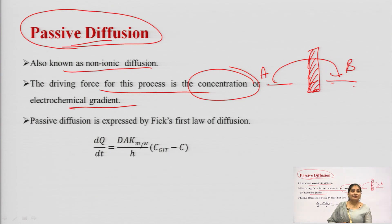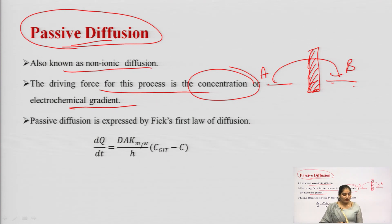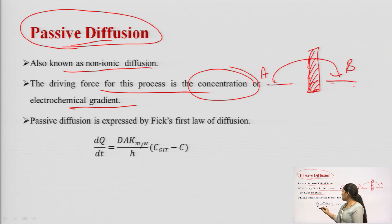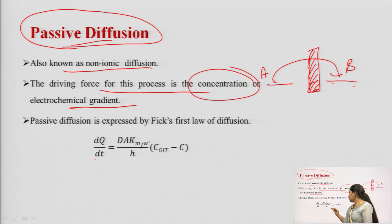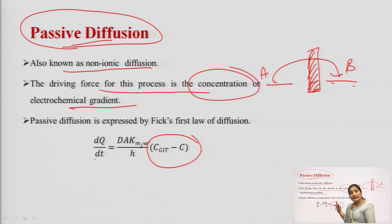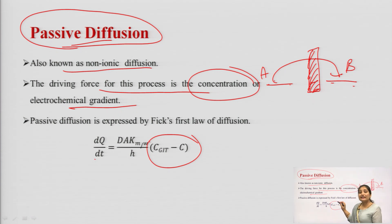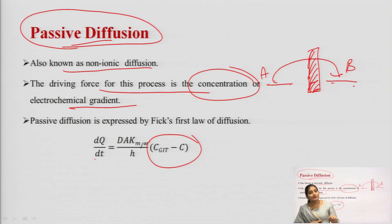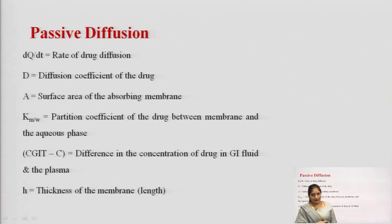This passive diffusion process can be expressed using Fick's first law of diffusion. The equation is: dq/dt = D·A·Km/w / h × (Cgit − C), where Cgit minus C represents the concentration gradient — that is, the difference in concentration between the GIT and the blood.